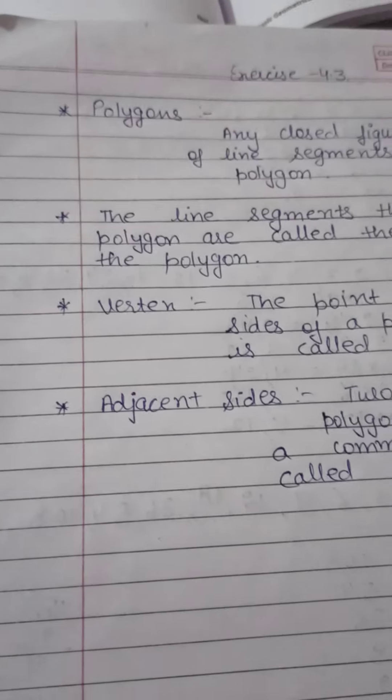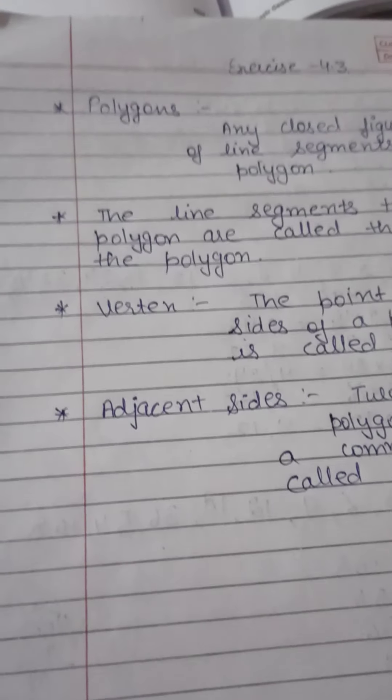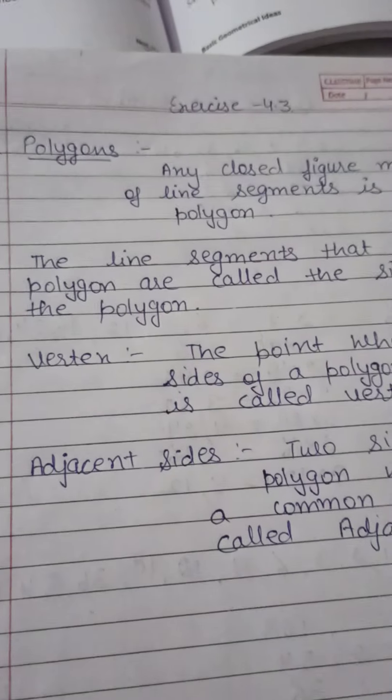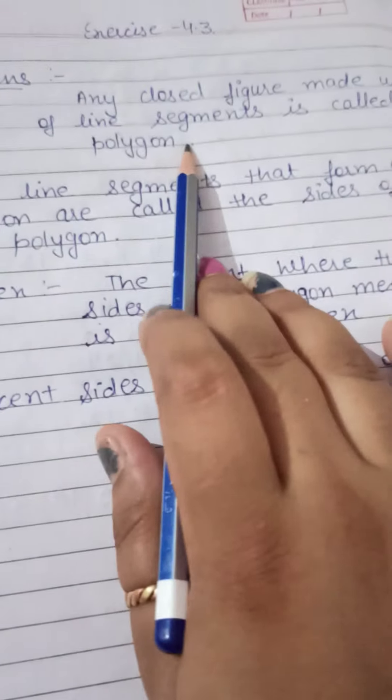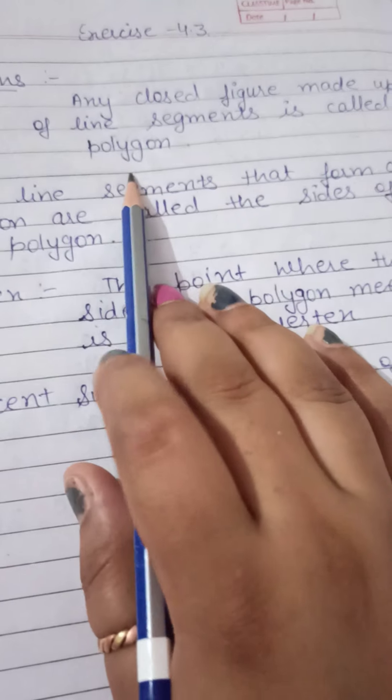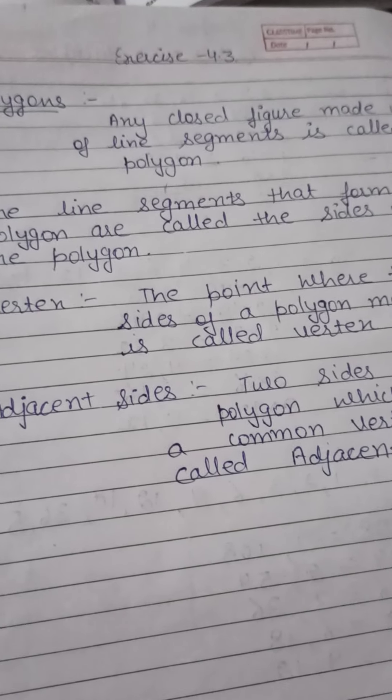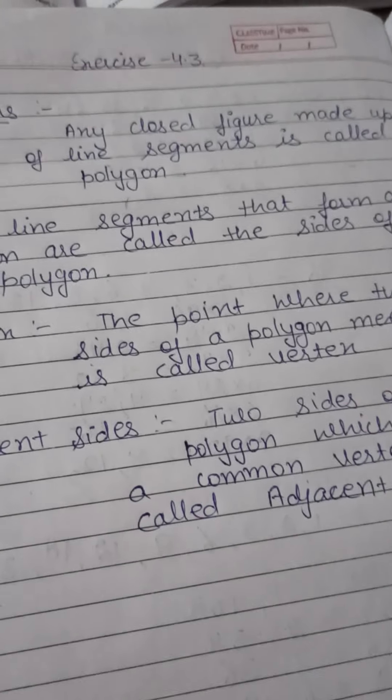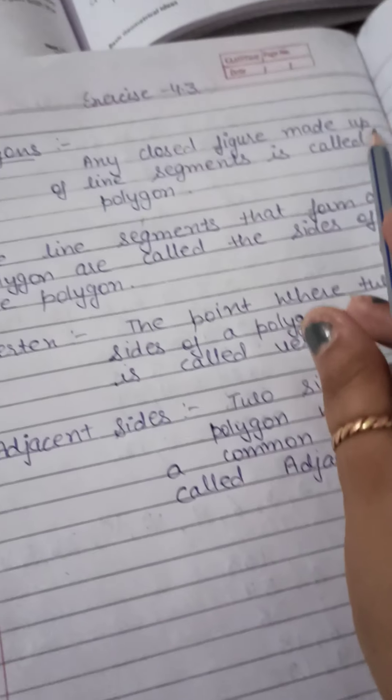Good morning class. Today we will study about polygons. Polygons are any closed figures made up of line segments. In yesterday's class we studied about closed figures and open figures. Now, polygons are any closed figure made up of line segments.